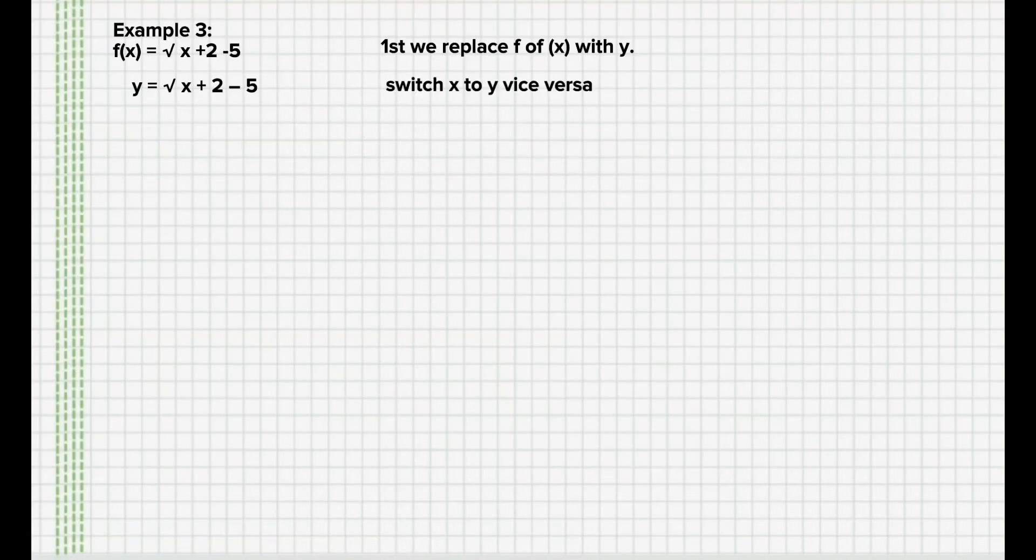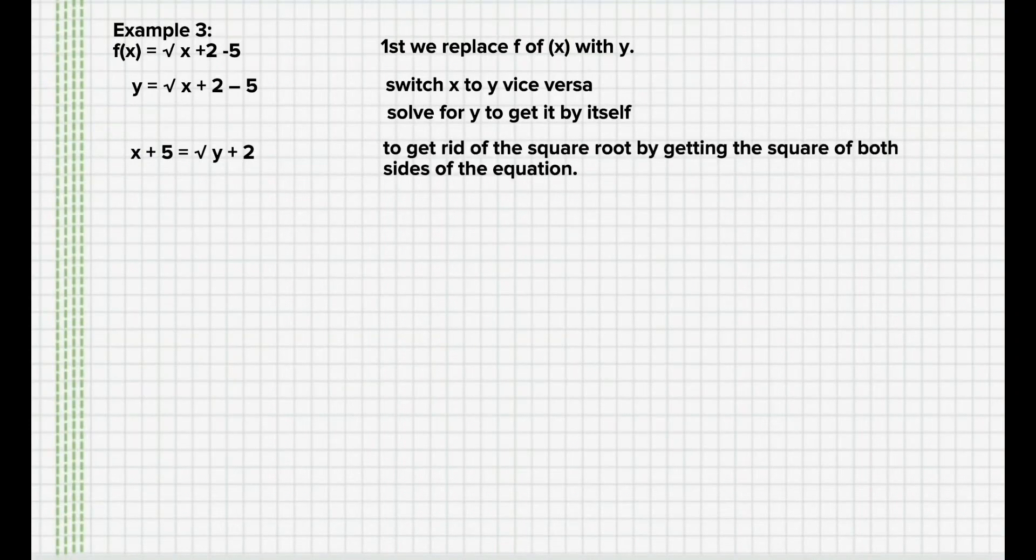Then, switch the x and y's, then solve for y. So, we have x + 5 = √(y + 2). Now, we have to get rid of the square root by getting the square of both sides of the equation.